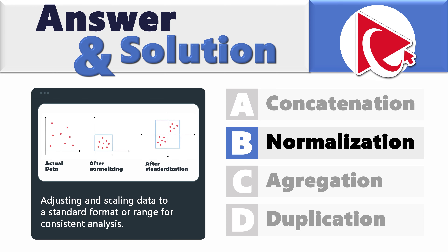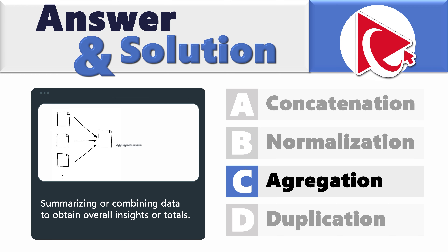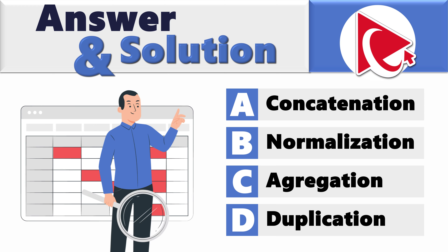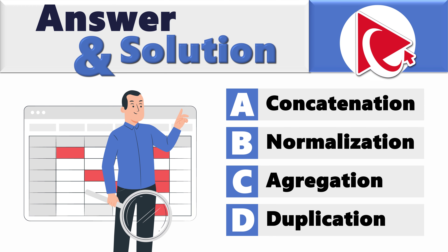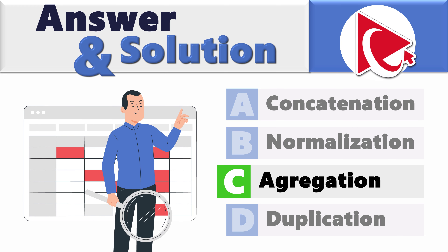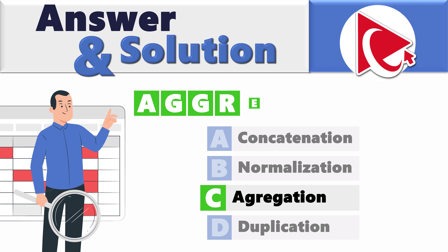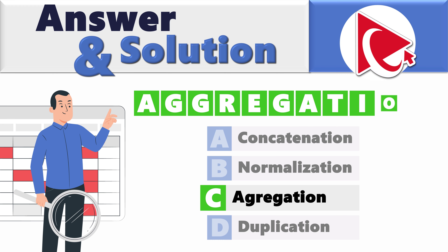Normalization is adjusting and scaling data to a standard format or range for consistent analysis. Aggregation is summarizing or combining data to obtain overall insights or totals. And duplication is creating identical copies of data or records within a dataset. The misspelled word is Choice C — aggregation. The correct spelling is A-G-G (two G's) R-E-G-A-T-I-O-N.